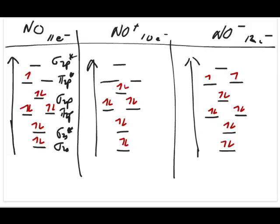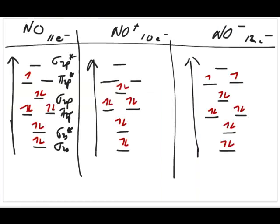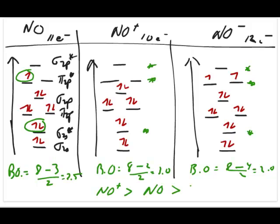To answer the bond strength question, we calculate bond order: bonding minus antibonding divided by 2. For NO: 8 minus 3 equals 2.5. For NO+: 8 minus 2 divided by 2 equals 3. For NO-: 8 minus 4 divided by 2 equals 2. Comparing relative bond strength: NO+ has the strongest bond, followed by NO, followed by NO-.